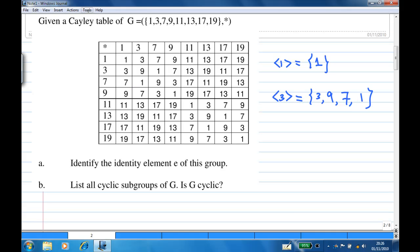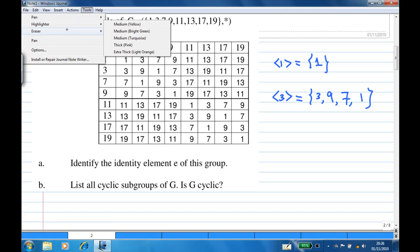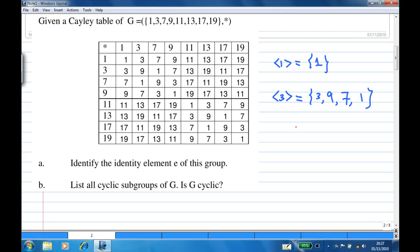So, what I have shown you is the element 3, 3 star 3, and 3 star 3 star 3 which is 7, and 3 star 3 star 3 star 3 is 1. So, the cyclic subgroup generated by 3 is 3, 9, 7, 1.